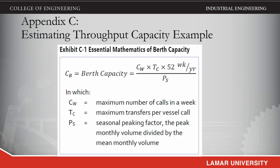Similar approaches can be used for ro-ro, dry and liquid bulk, break bulk, and passenger terminals. Berth capacity is calculated by multiplying the maximum number of vessel calls in a week by the maximum cargo or passenger units transferred per call, analyzing the results, and then dividing by seasonal peaking factor.